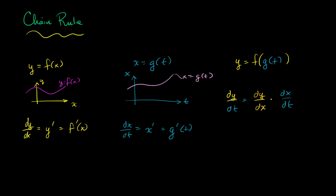Or if you want to use another notation, we could say this is equal to f prime. And these can both be expressed as functions of t. So f prime of x of t, or x of t is the same thing as g of t. So f prime of g of t.